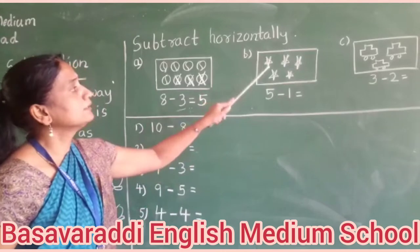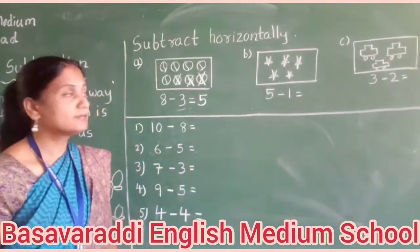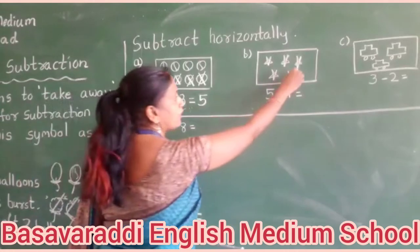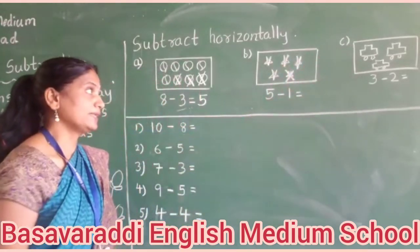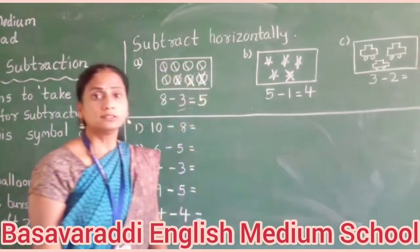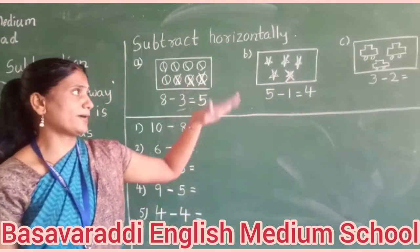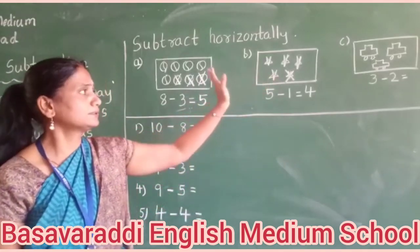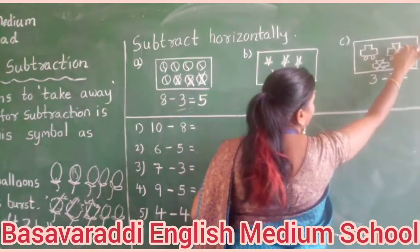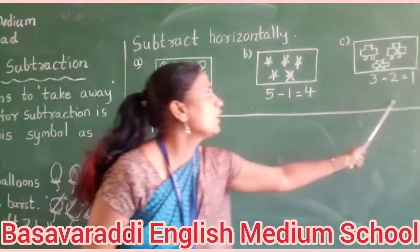Second one: how many stars are in the box? One, two, three, four, five — five stars. Minus means we have to cross one star. Remaining: one, two, three, four — four stars remain. Next, in the parking, three cars are there and two cars left. We have to cross two cars. Remaining: only one car. We have to write one. This is a horizontal sum.